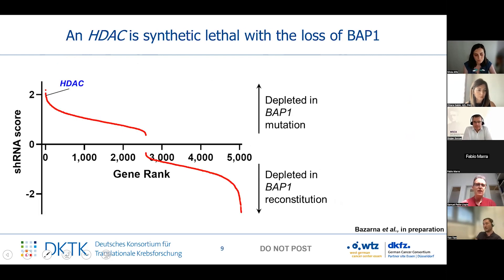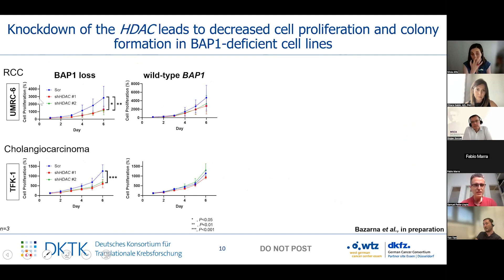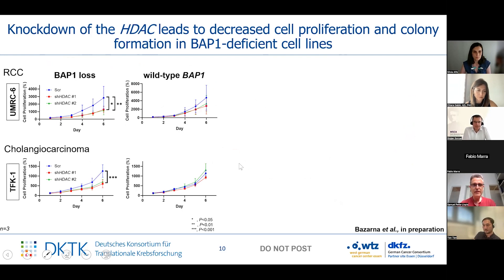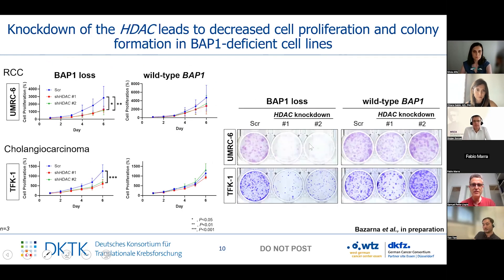By doing the bioinformatic analysis of that approach, we identified a histone deacetylase. We then validated this using renal cell carcinoma and cholangiocarcinoma cell lines, showing that only in the context of BAP1 loss is there a decrease in proliferation. There is also a decrease in colony formation that is specific when there is BAP1 loss, and not when wild-type BAP1 is present.